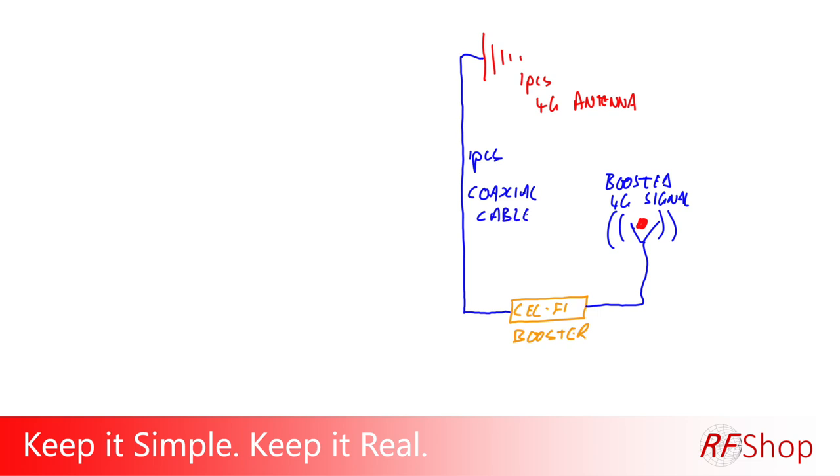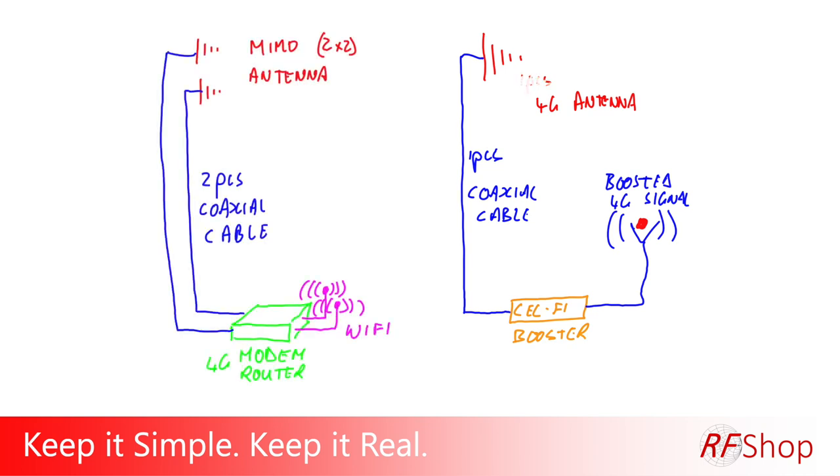You do need then another cable with another antenna on the internal side, so coming out of the CellFi that produces the new boosted 4G signal. Again fairly simple, it's an antenna cable, booster cable and another antenna on the inside. But they're two separate systems.